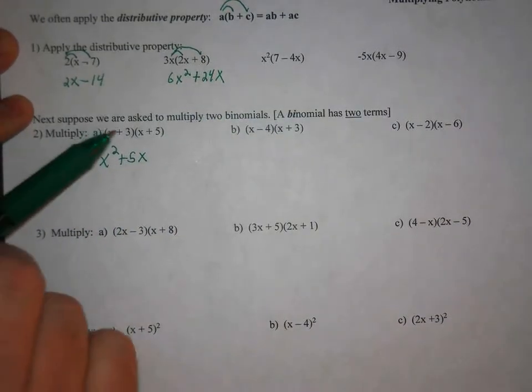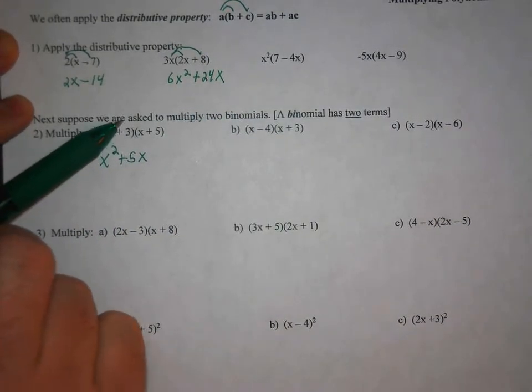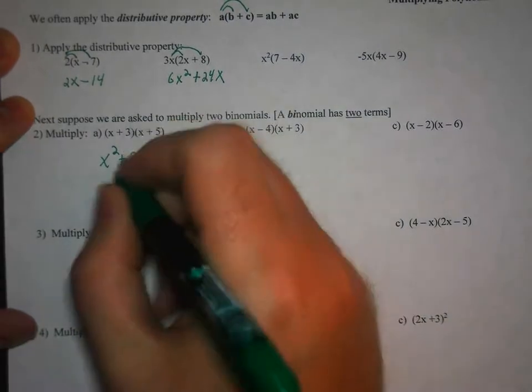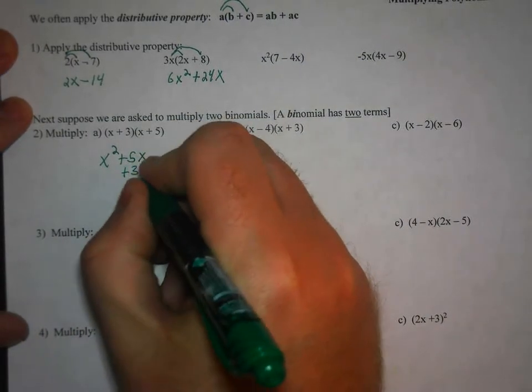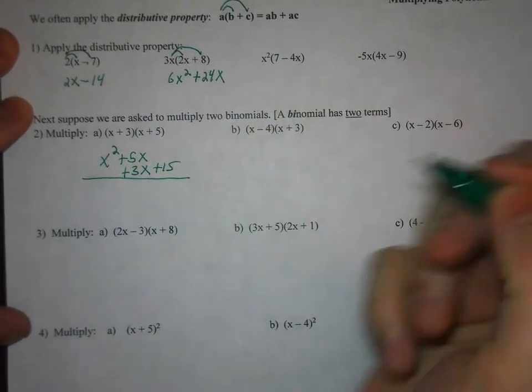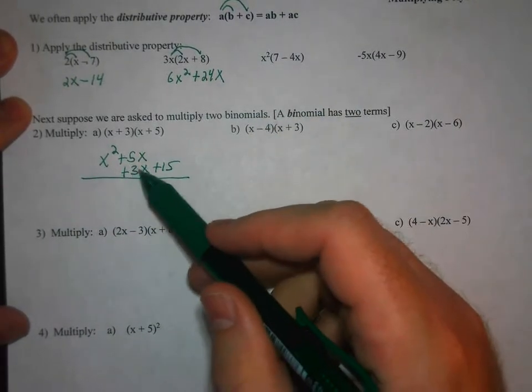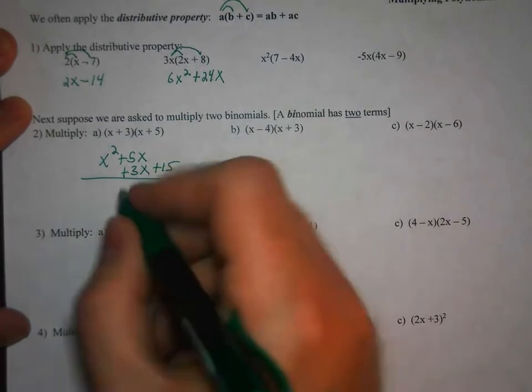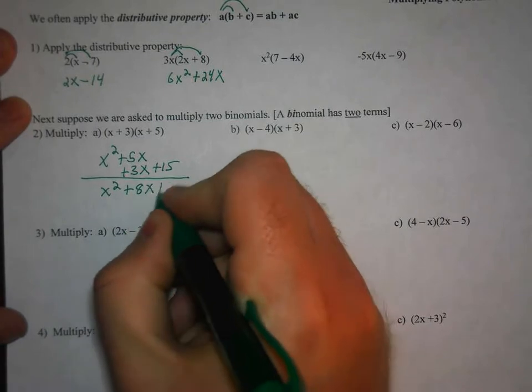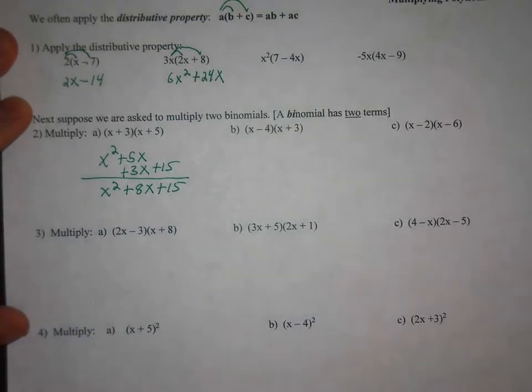And then cover up that first term, the x, and multiply positive 3 times x plus 5. And that will give you 3x plus 15. Now just the way that I'll write it here, I try to line up like terms. So 3x plus 15. And then you can combine the two terms in the middle, the 5x and the 3x. So you end up with x squared plus 8x plus 15.